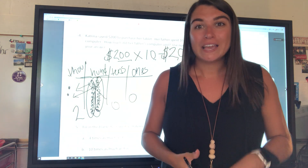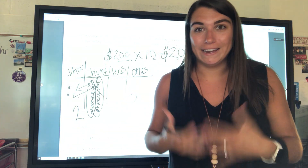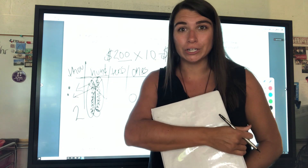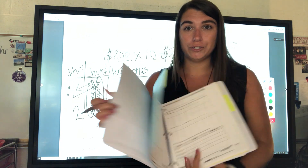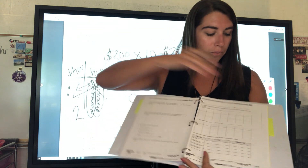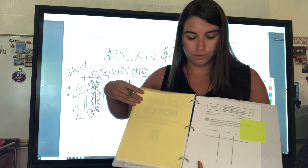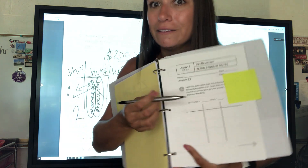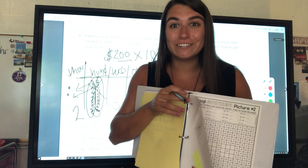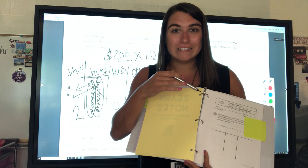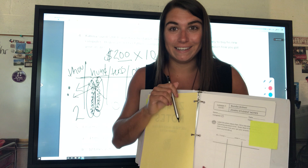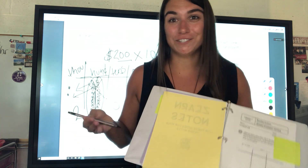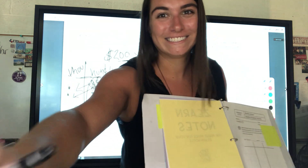Now go ahead, get your binder, go to Zern, and do lesson one Zern. Fill out your notes — looks pretty similar, right? Then go back to your checklist and do the exit ticket. Good luck! Remember, if you have any questions, make sure you reach out to me.